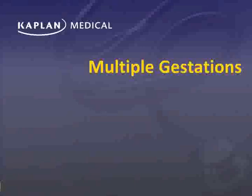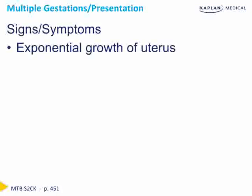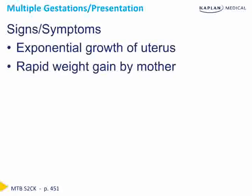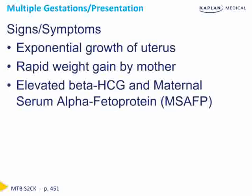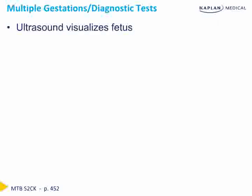We're going to move on and talk about multiple gestations. Multiple gestations are becoming increasingly more common and can be an easily tested topic on the Step 2 exam. Signs and symptoms include exponential growth of the uterus, rapid weight gain by the mother, an elevated beta-HCG, and maternal serum alpha-fetoprotein. Due to the use of fertility drugs, the multiple gestation rate is on the rise and is currently about 3%. Multiple gestations are ultimately diagnosed via ultrasound.